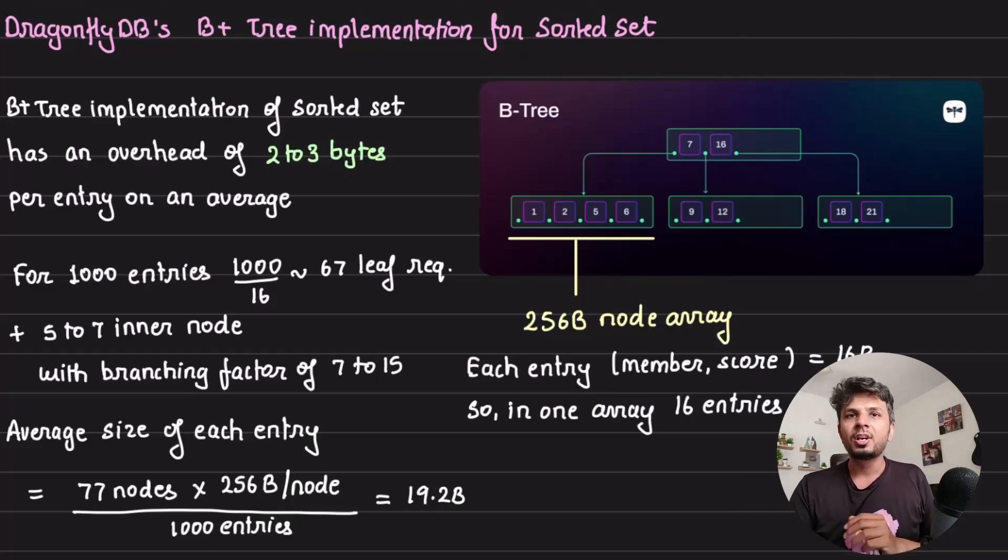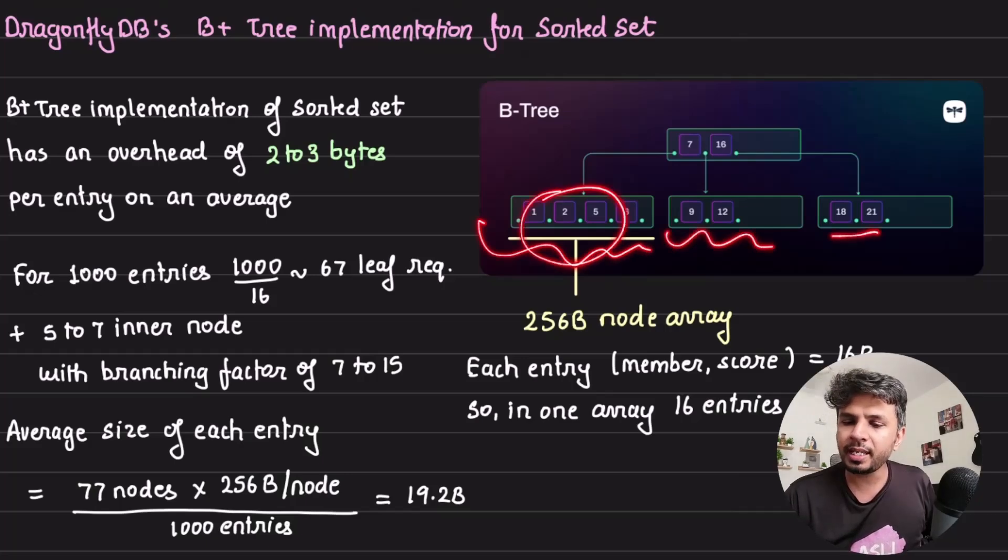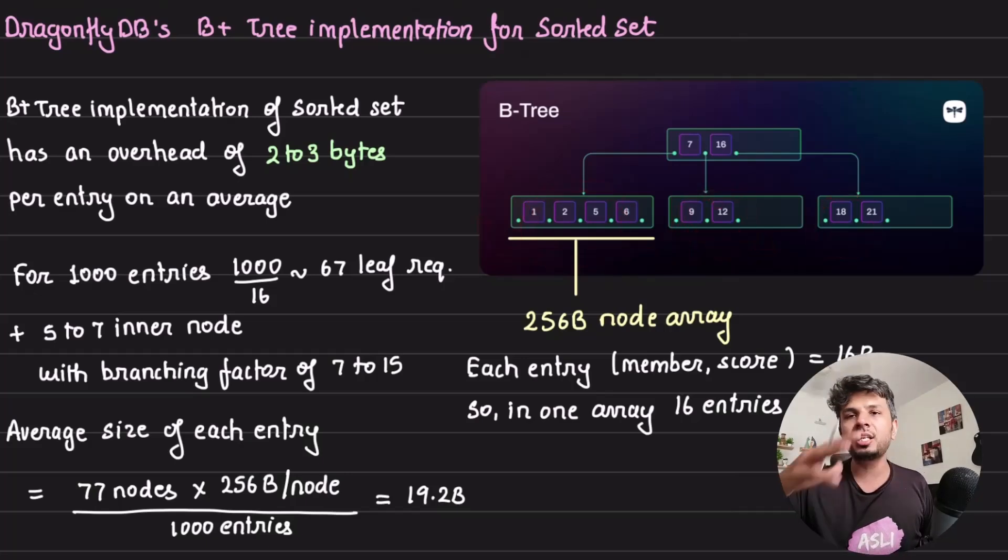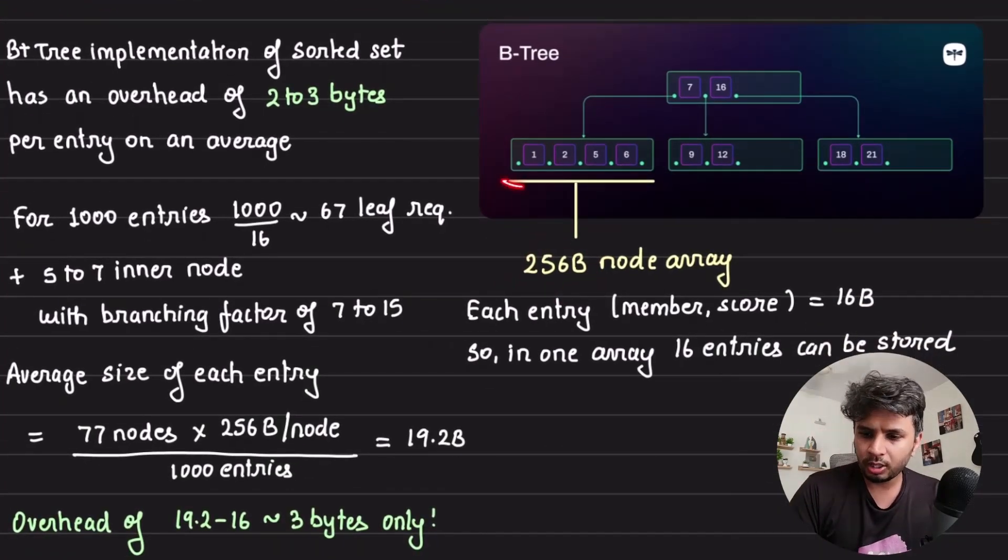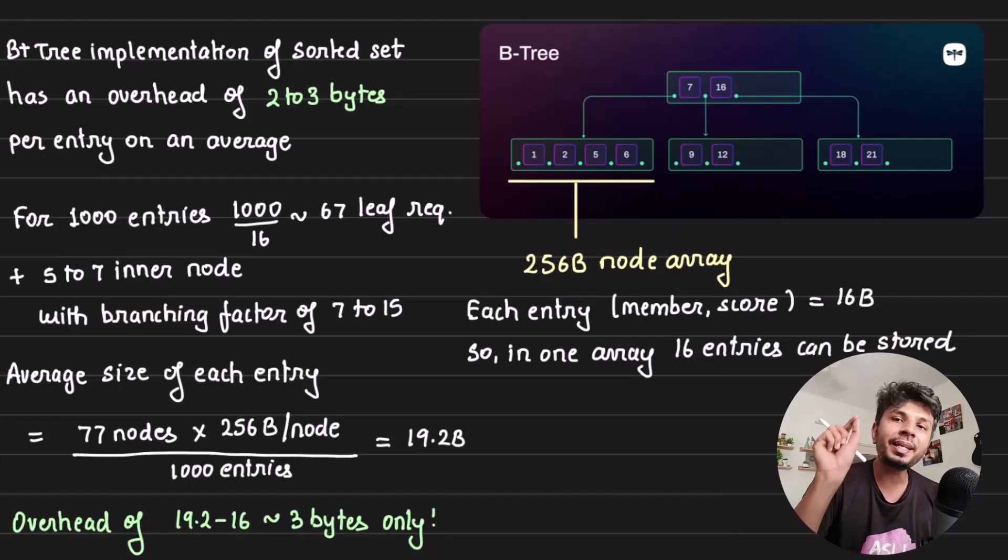B+ tree is very simple. It has a branching factor - it's not a binary tree, it has a wide range of branching factors. Each leaf of a B+ tree is where your data is held. Each leaf node of a B+ tree is a 256 byte array.